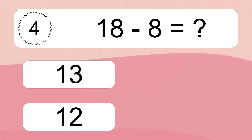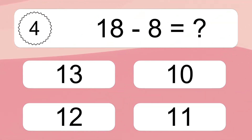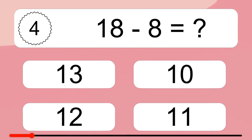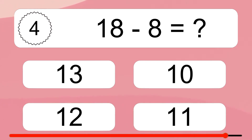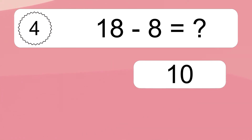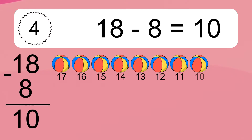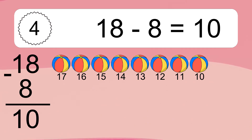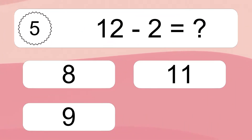18 minus 8 equals what? 18 minus 8 equals 10. Let's count it: 17, 16, 15, 14, 13, 12, 11, 10.